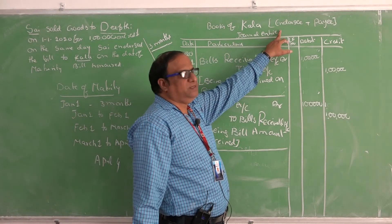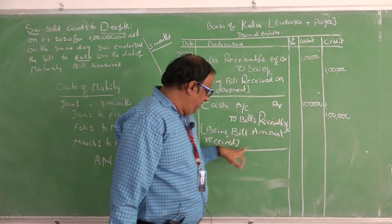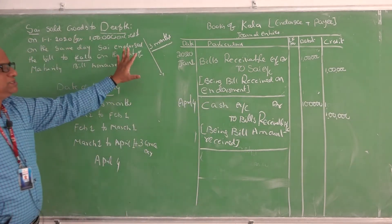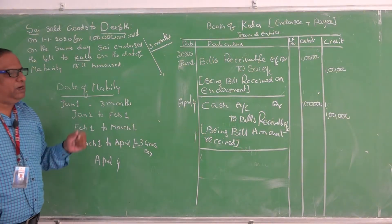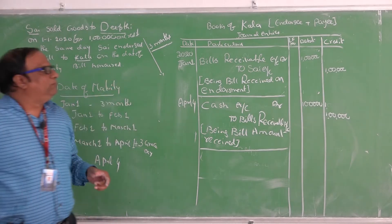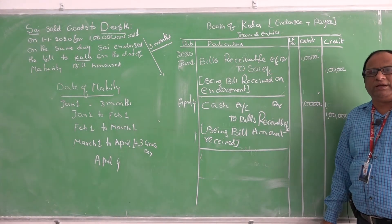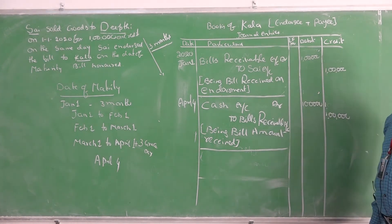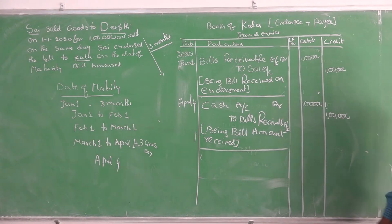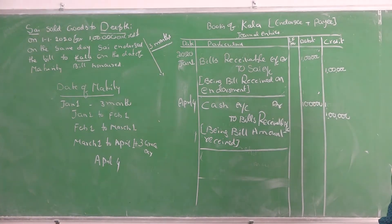Kala is called the endorsee — the person who receives the bill amount on the date of maturity. The bill amount is received by Kala from Deepti. This is the problem of endorsement. Bills receivable to Saai account, and cash account debit to bills receivable account — that is the key of this problem. The bill was honored. Endorsement means transfer of the bill.